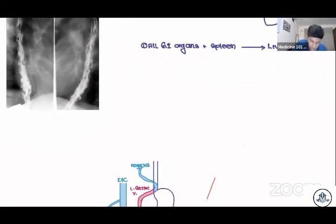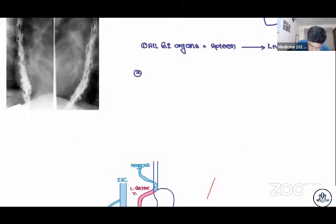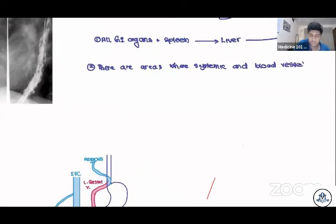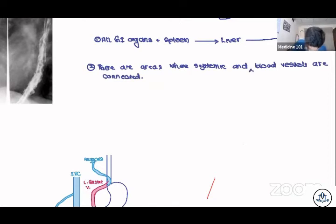However, there are areas where the systemic and portal blood vessels are connected. Let me explain — there are areas where the systemic and the portal blood vessels are connected.